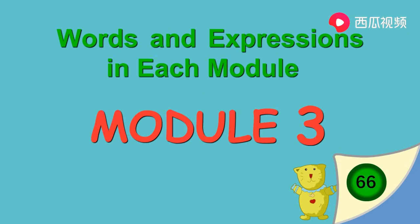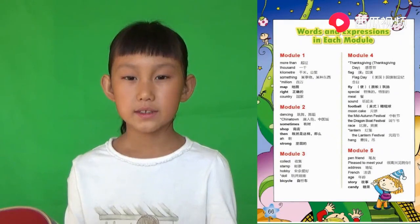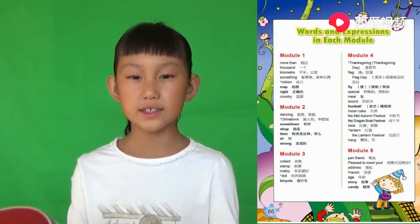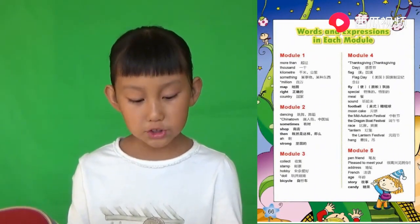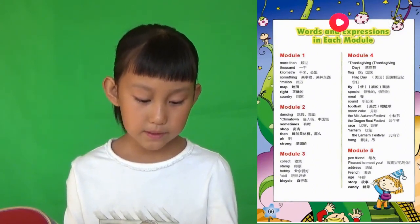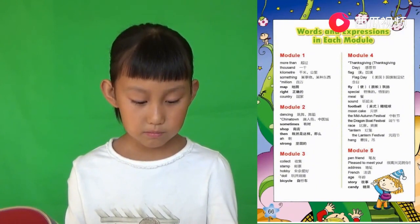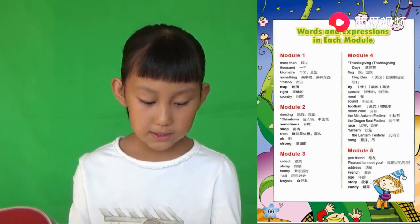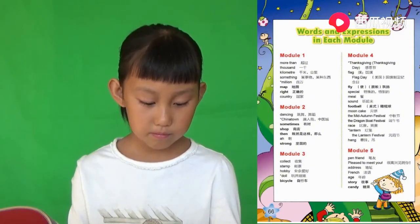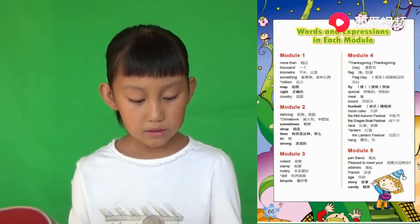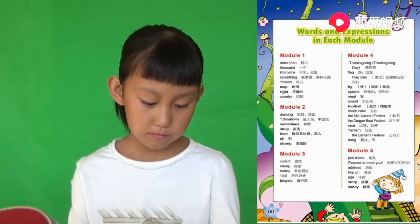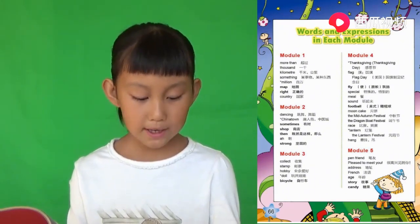每个模块的单词与词组。请把书翻到第66页，Module 3。Collect. Stamp. Hobby. Doll. Bicycle.